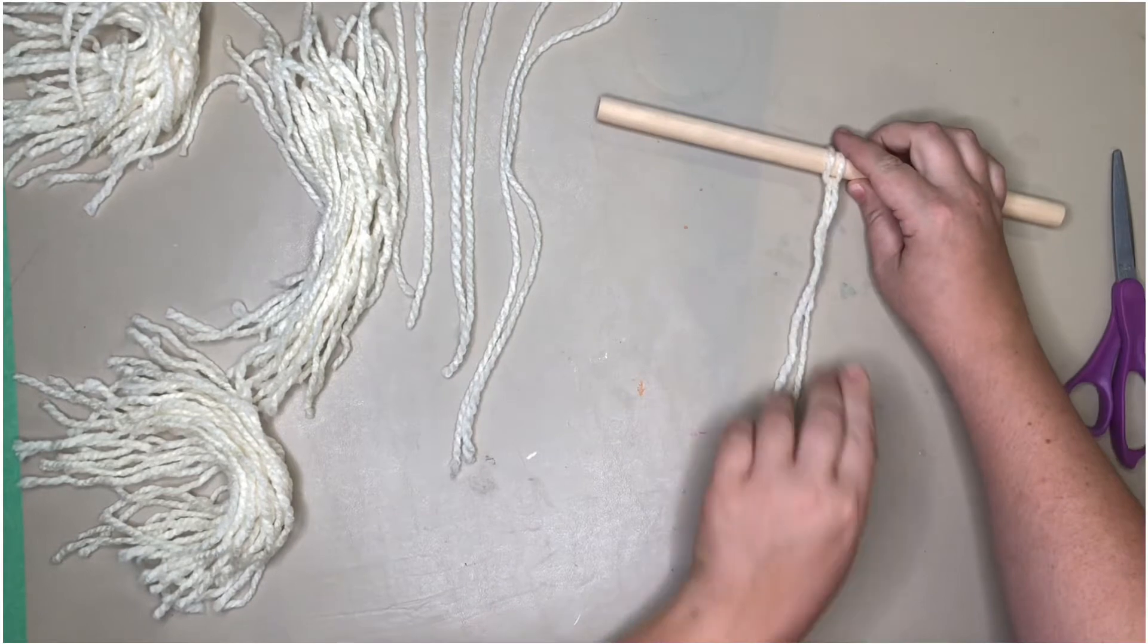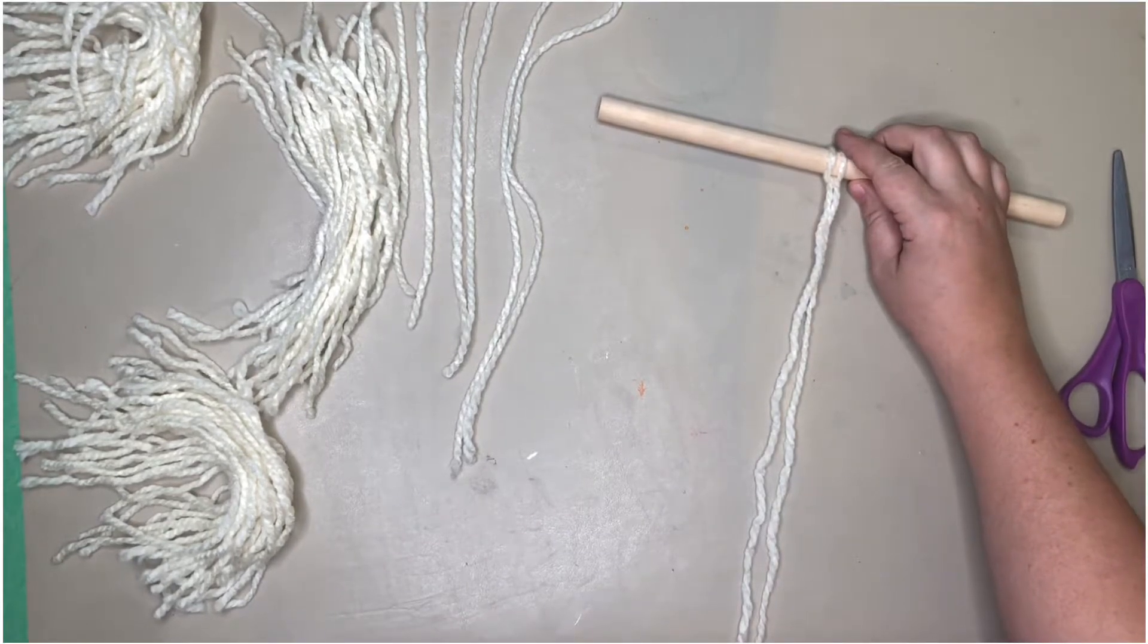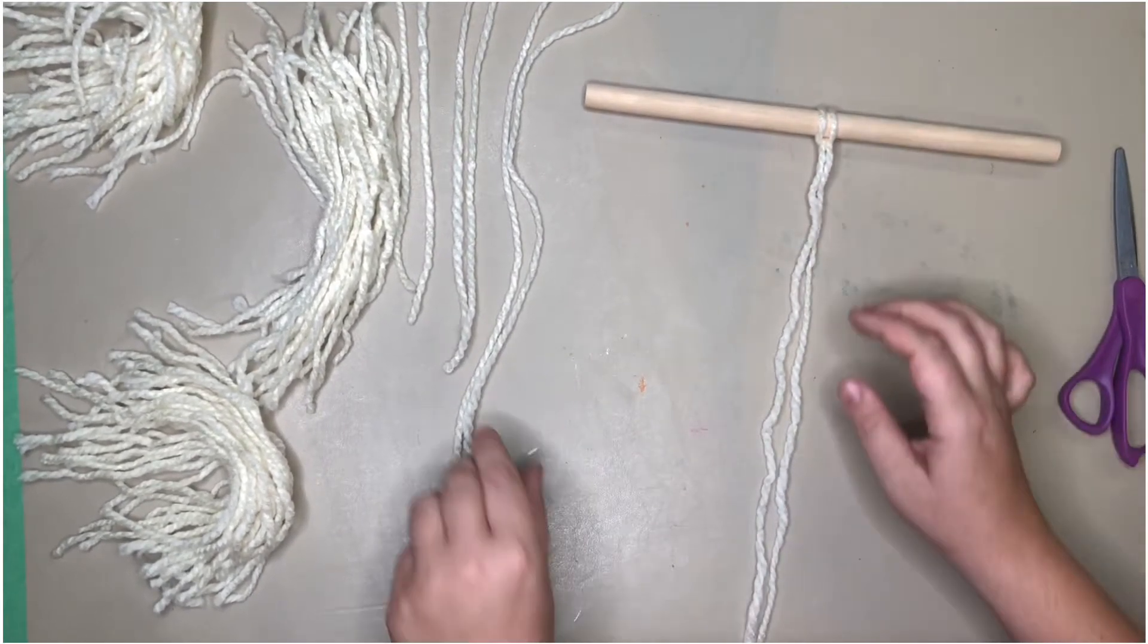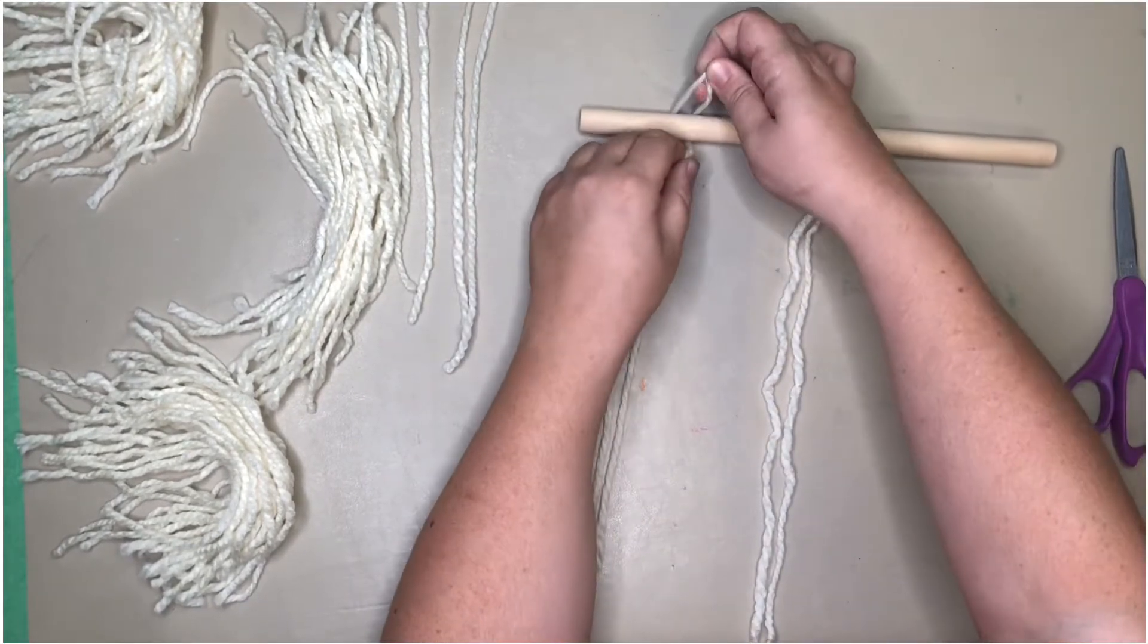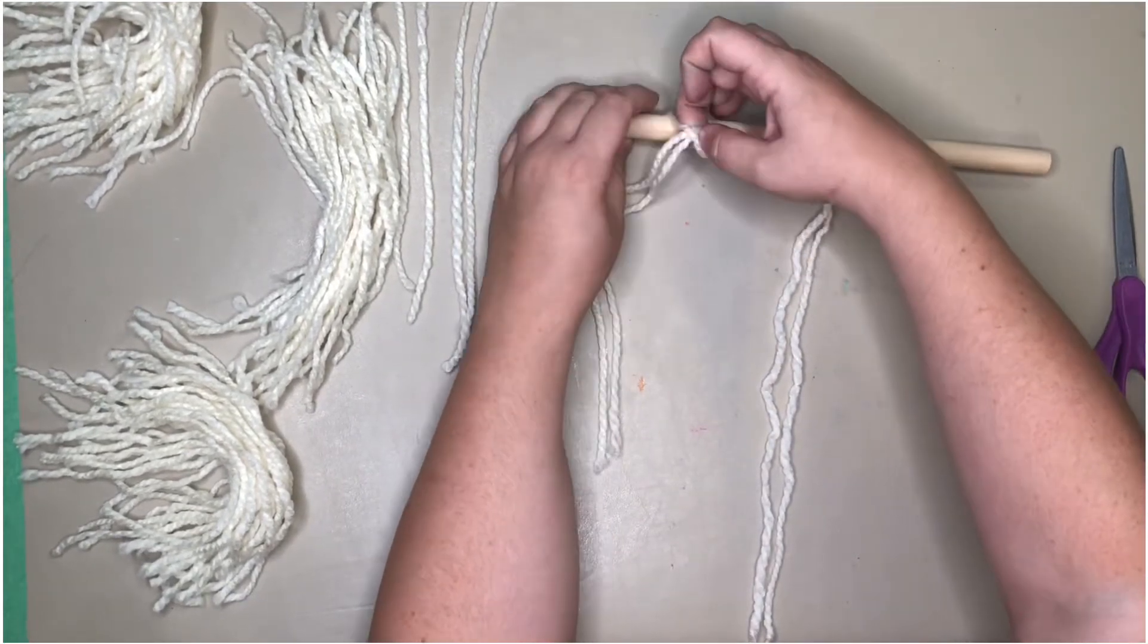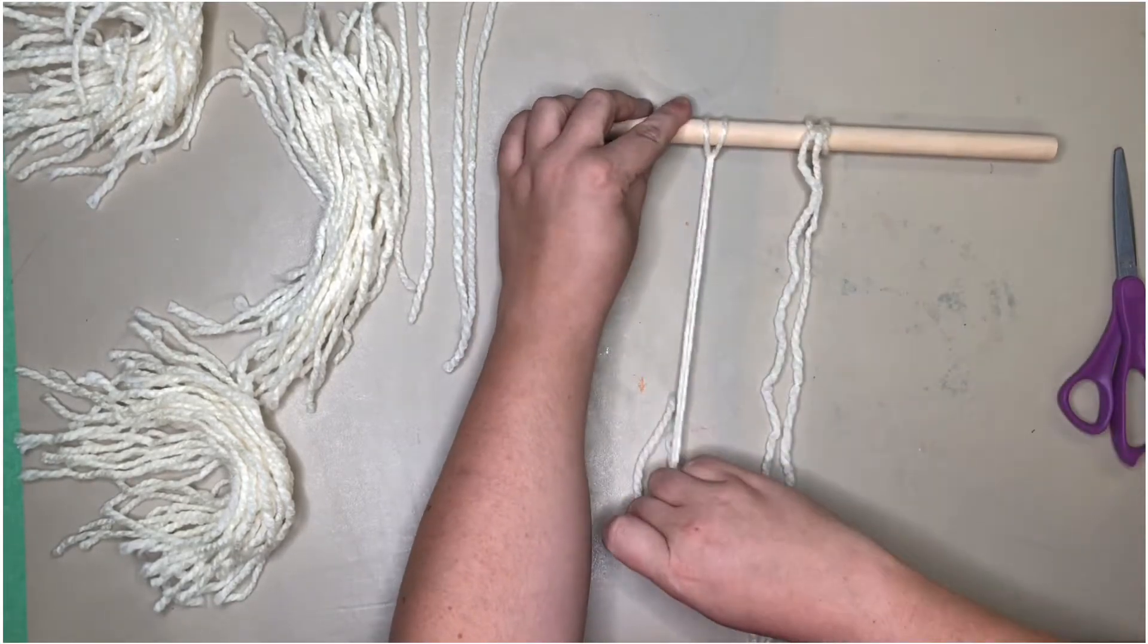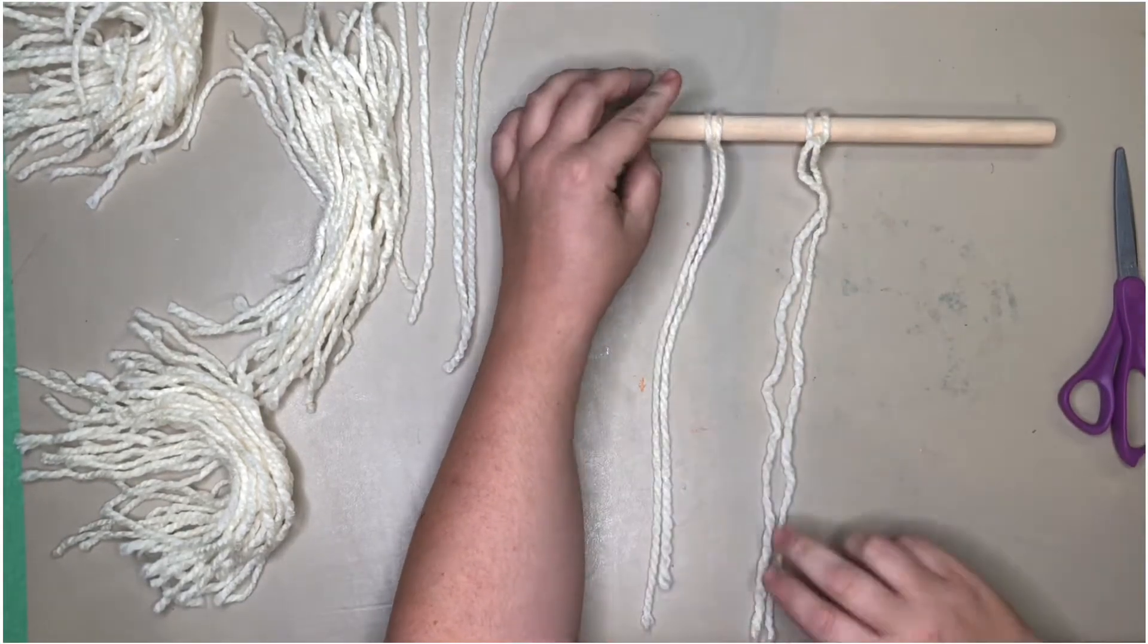Then the next shortest on the side, next shortest on the other side, and use the shortest one to hang up the whole wall hanging. You can put them in different orders or make them all the same length, completely up to you. This is just what I did.